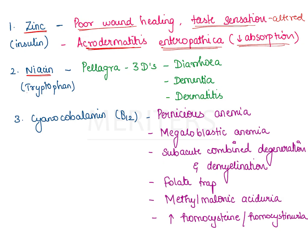The next substance is niacin, which is vitamin B3. It is synthesized from tryptophan, and its deficiency results in a condition known as pellagra. This is manifested in the form of three D's — diarrhea, dementia, and dermatitis. Remember: the three D's of pellagra are diarrhea, dementia, and dermatitis.